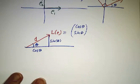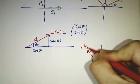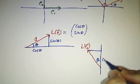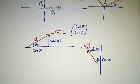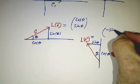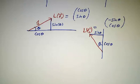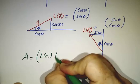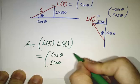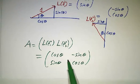To figure out L(e2), we do a little bit more trig. Here's our y-axis, here's our vector L(e2), and here's our angle θ. This horizontal distance is cos θ and this vertical distance is sin θ. So the x-coordinate of L(e2) is minus sin θ, because we're going to the left, and its y-coordinate is cos θ. So now we've got our matrix. Our matrix is [L(e1) | L(e2)], which is [[cos θ, -sin θ], [sin θ, cos θ]]. If you ever want to rotate a vector by an angle θ, just multiply it by this matrix.